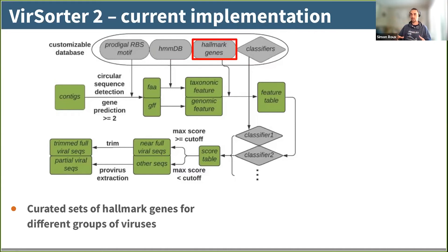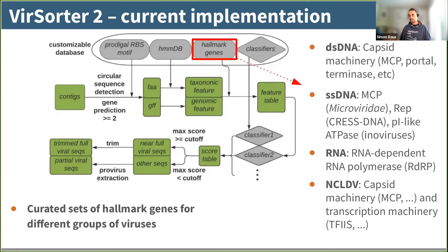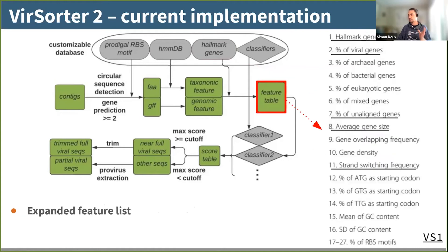With this new database, we also had to define which genes are hallmarks. As mentioned, we mostly focus on capsid machinery. For some viruses you can also use replication machinery as a hallmark — for RNA viruses, the RDRP genes are hallmarks because only RNA viruses need to replicate RNA from an RNA template. Otherwise, we worked with experts in each taxonomic group to robustly identify which genes and profiles were part of the capsid machinery. This gives us a pretty expanded feature table — on the right you can see the full list of features fed to the classifiers, with underlined features being those from VSorder1, showing how much we expanded the list.